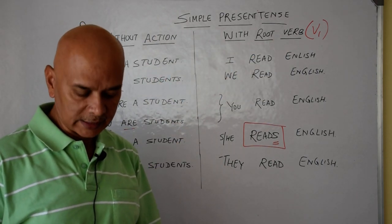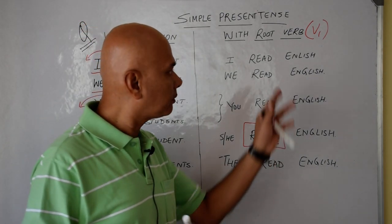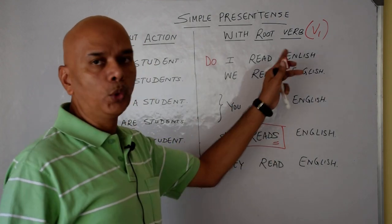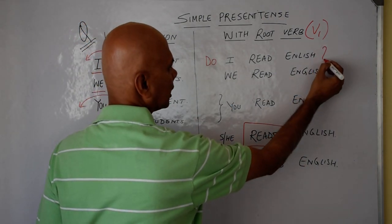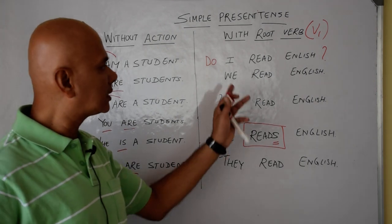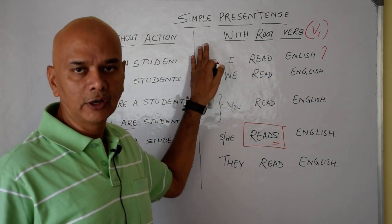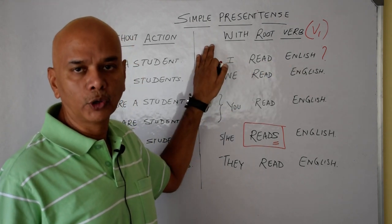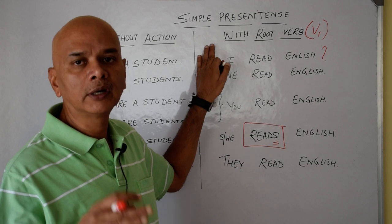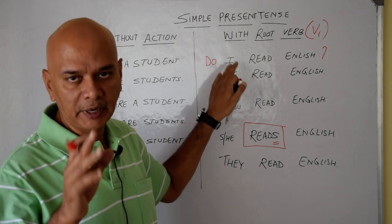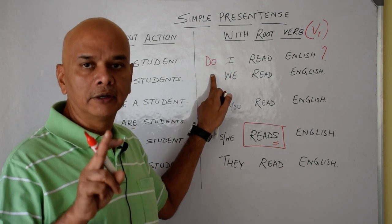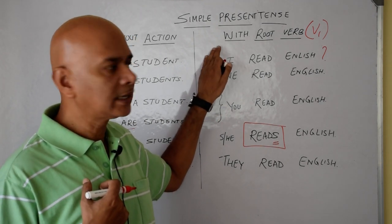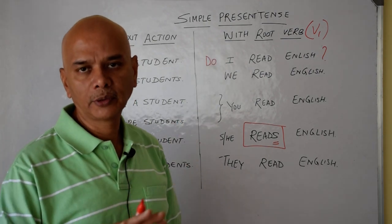Be careful in simple present tense: when you use the root verb, you have to use 'do' to form a question. Do I read English? — this becomes a question. Answer: yes, I read English. In the answer, 'do' will not come. No, I do not read English.